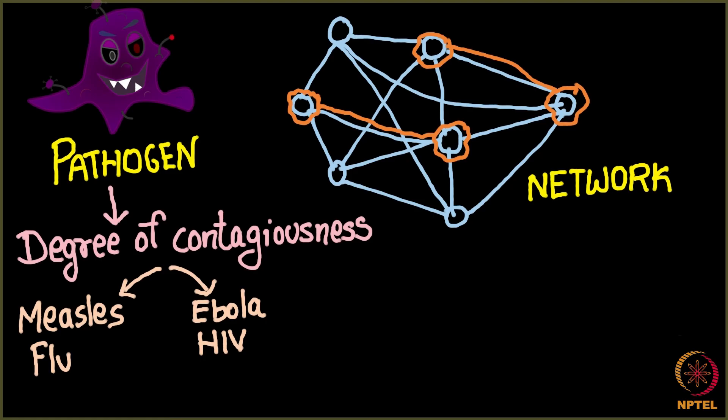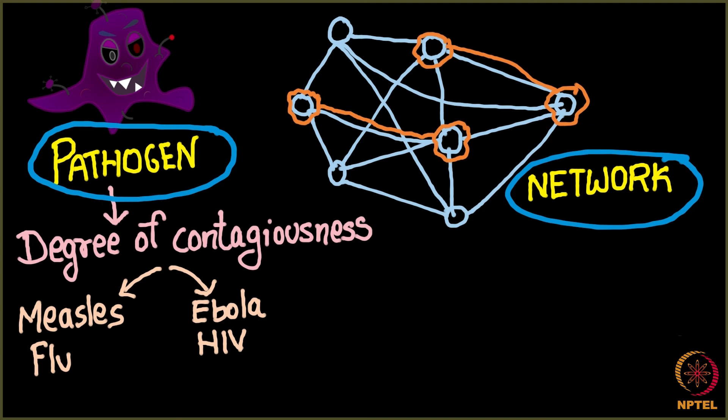So these are the two things which are most required for modeling the spreading of a disease. The first one is the pathogen - how contagious it is - and the second one is obviously the network structure. So we'll be using just both of these two things to model the spread of diseases on our social networks.